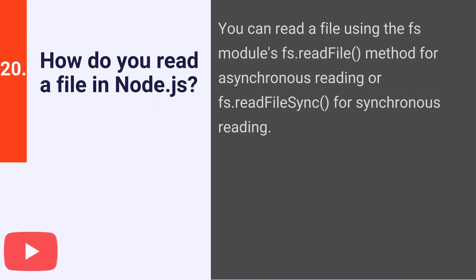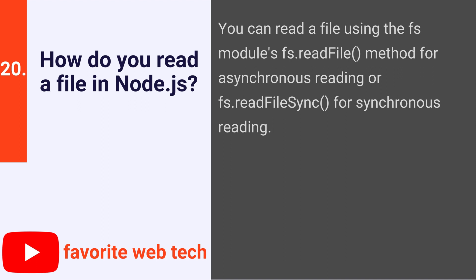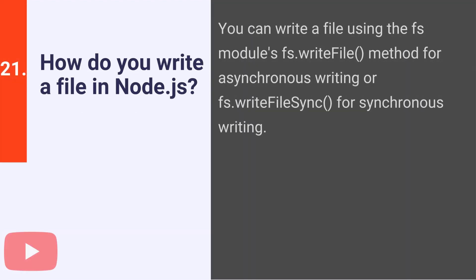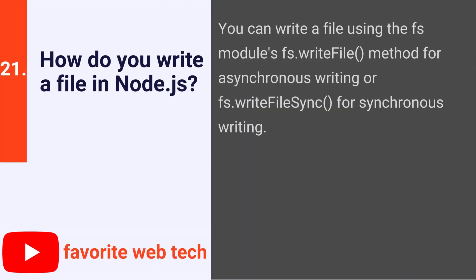How do you read a file in Node.js? You can read a file using the fs module's fs.readFile method for asynchronous reading or fs.readFileSync for synchronous reading. How do you write a file in Node.js? You can write a file using the fs module's fs.writeFile method for asynchronous writing or fs.writeFileSync for synchronous writing.